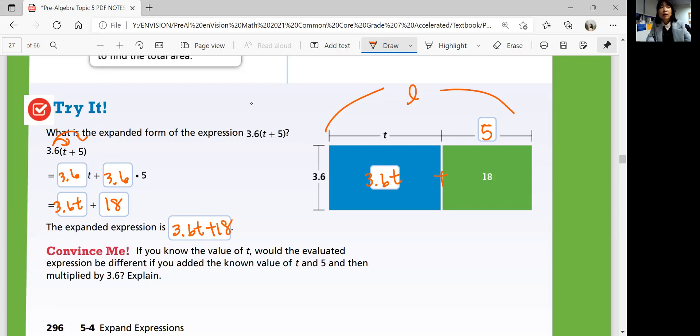Convince me, if you know the value of t, if you know t is equal to a number, would the evaluated expression be different if you added the known value of t and 5 and then multiply by 3.6? So is this going to be different with this? No, because they're equivalent expressions. They should have the same value with the same value of t. So if t is equal to 2, for example,